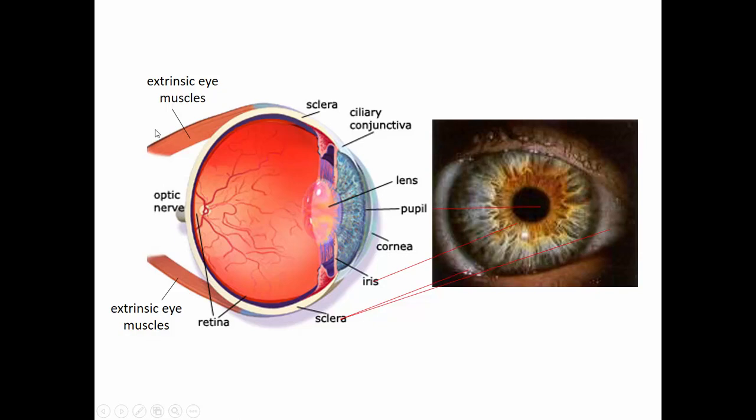We also have voluntary muscles that can move the eyeball around so we can shift our gaze to the side, up, or down, moving our eyeballs independently of our head. Our extrinsic eye muscles when we're born are not coordinated, so as a result a newborn's eyes can move in different directions — which is totally normal. As our visual system develops after birth, those eye muscles become coordinated so that if we move one eye in one direction, the other automatically follows to focus on the same image.